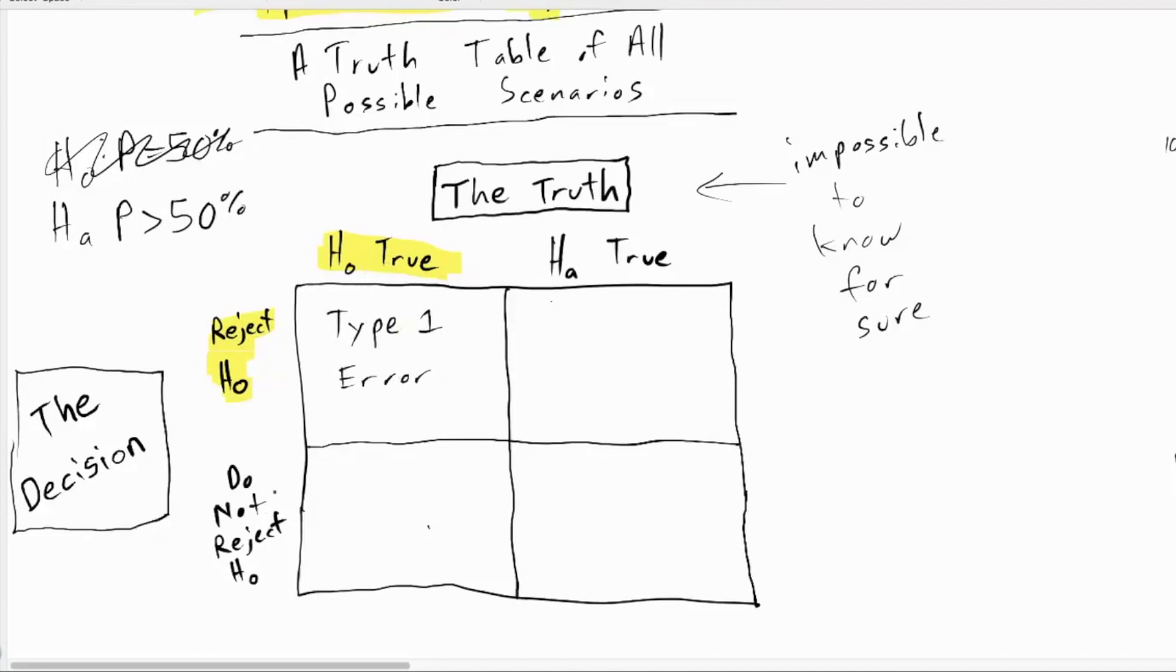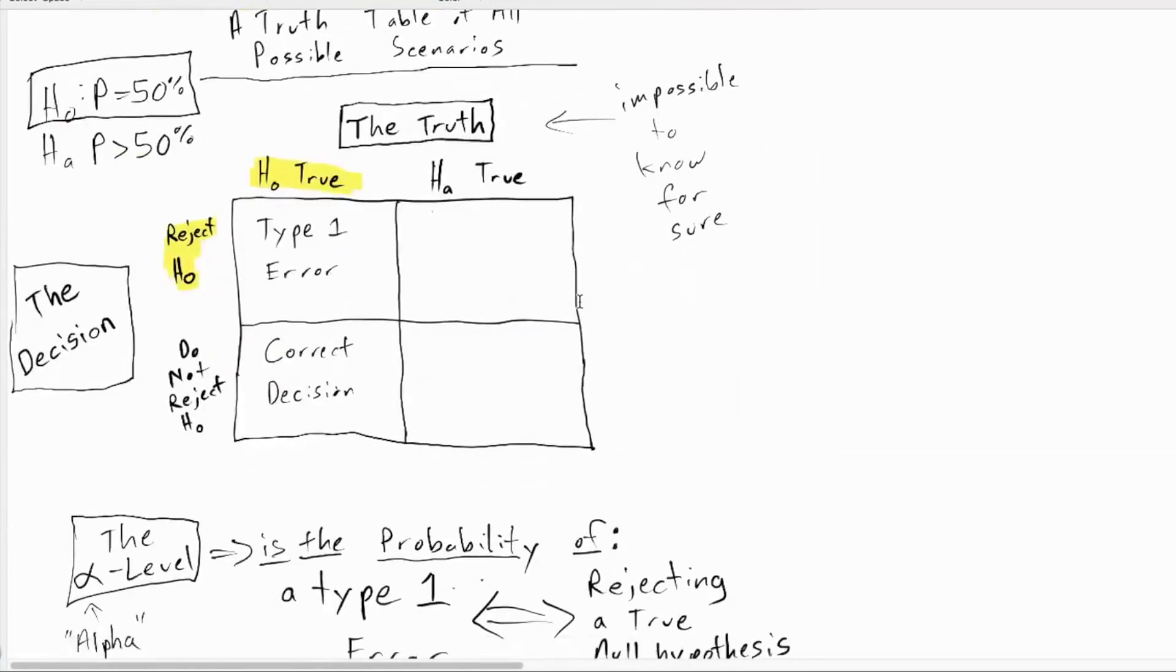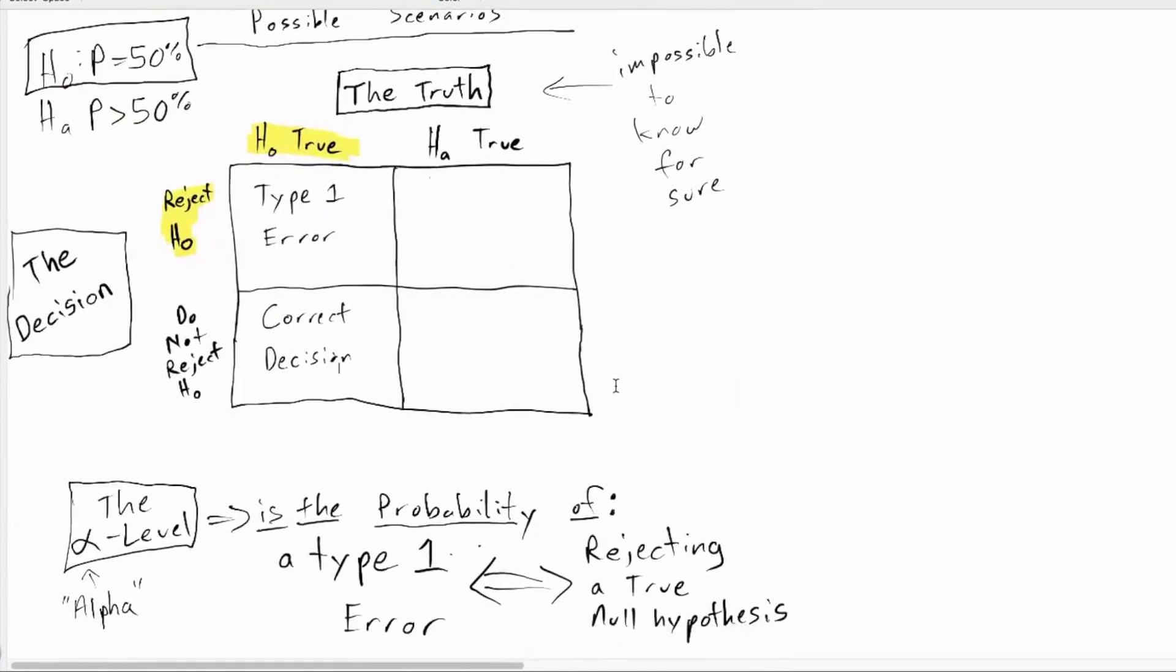What about if the null was true and your decision was to not reject it? The null is true and then we end up not rejecting it. We made the right call. We got it right. We made the correct decision. So when the null is true, you can either get it right or you can mess it up. You never know for sure what happened, but there are probabilities of this and the probability of a type one error is alpha. The alpha level is the probability of a type one error. It's the probability of rejecting the null hypothesis when it's true.